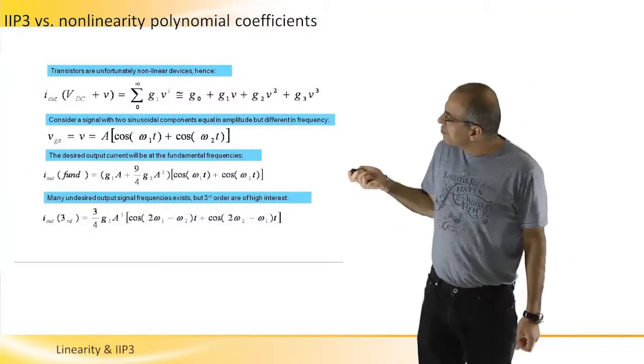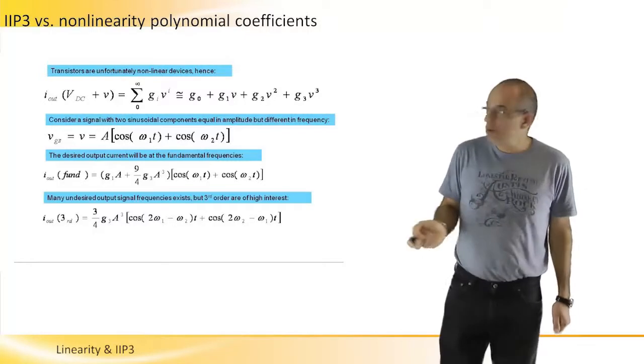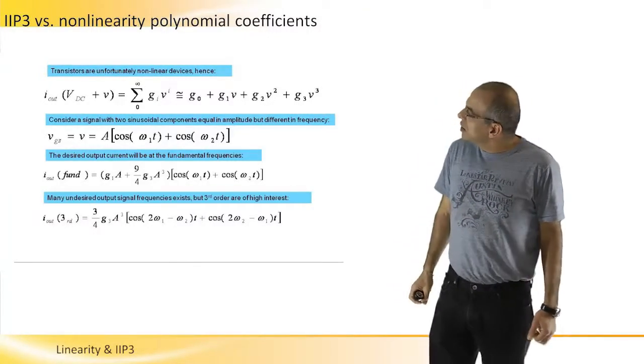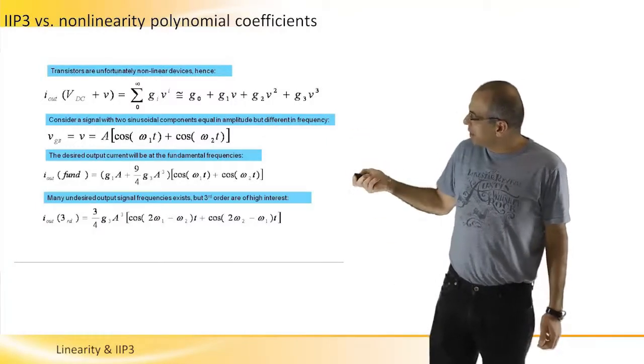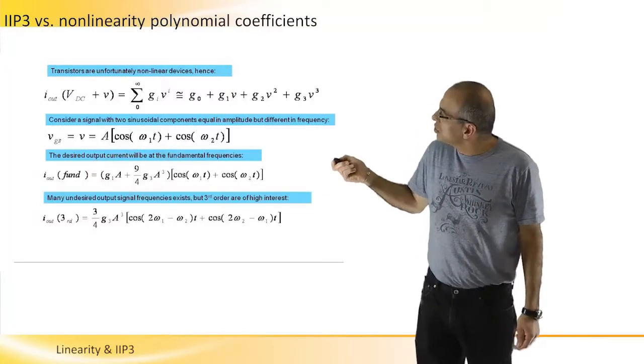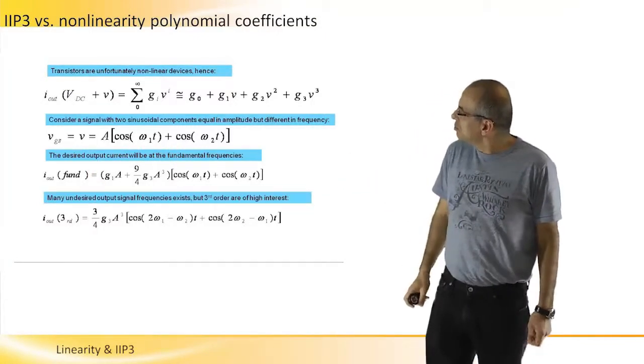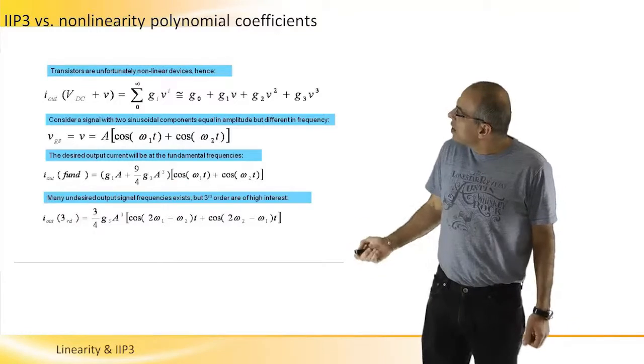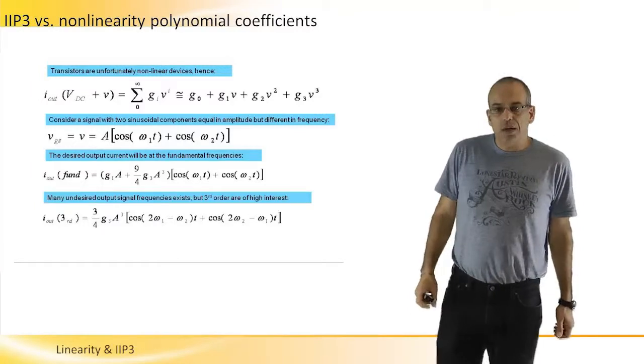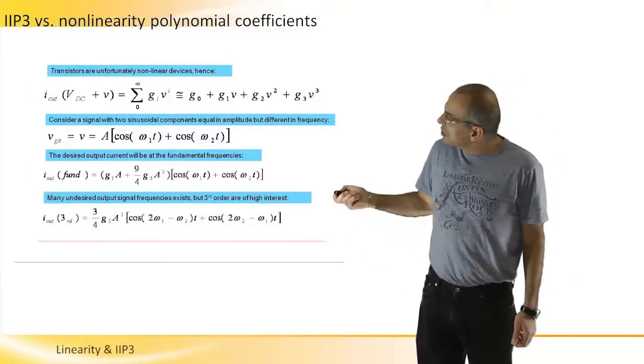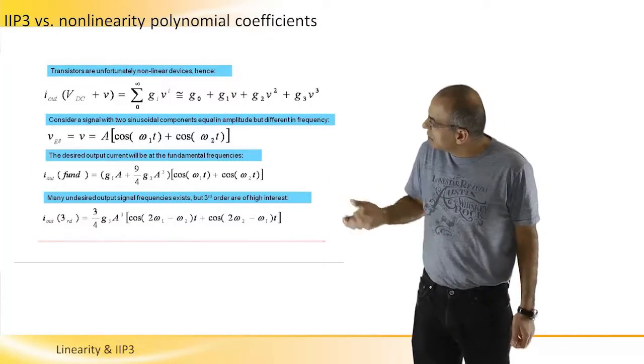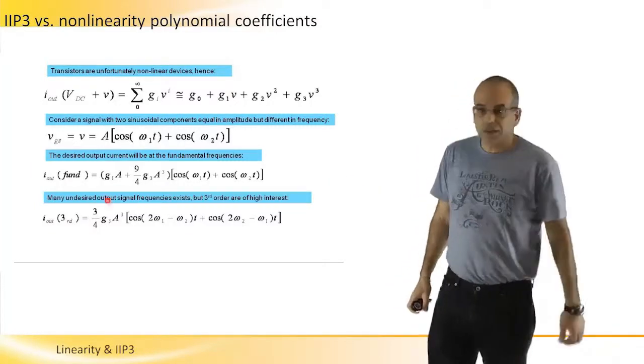And we will just sum the output current at the different frequencies of interest. So at the fundamental frequencies, we will find this coefficient as multiplying the two cosines. And so we have here G1 A, which was the constant multiplying the cosines. And we will have another term here that is resulting from the third order.